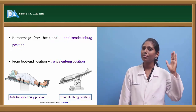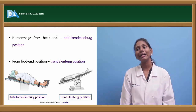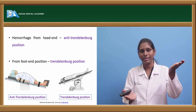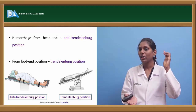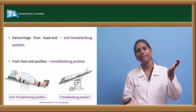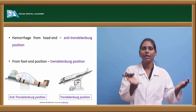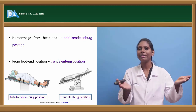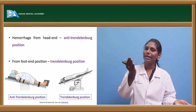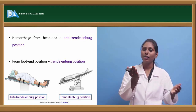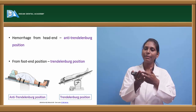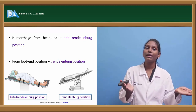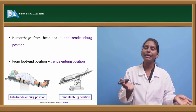For bleeding from the head end, use anti-Trendelenburg position — head elevated, legs down — to move blood against gravity and reduce flow to the injury site. For bleeding or hemorrhage from the foot end, use Trendelenburg position — legs up, head down — to prevent peripheral pooling of blood, restore blood to circulation, and help perfuse the brain.